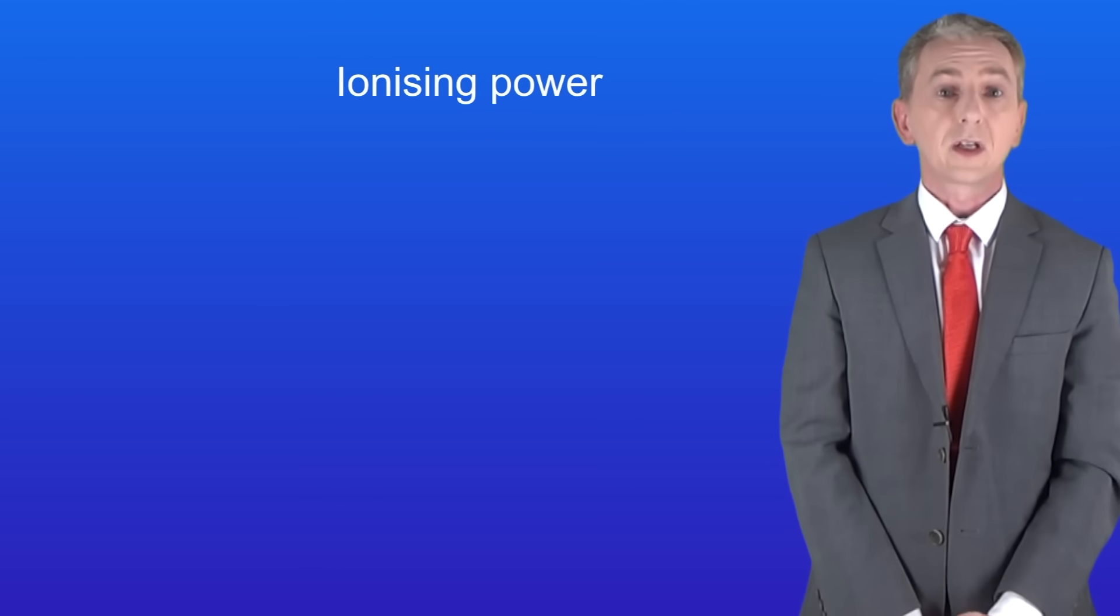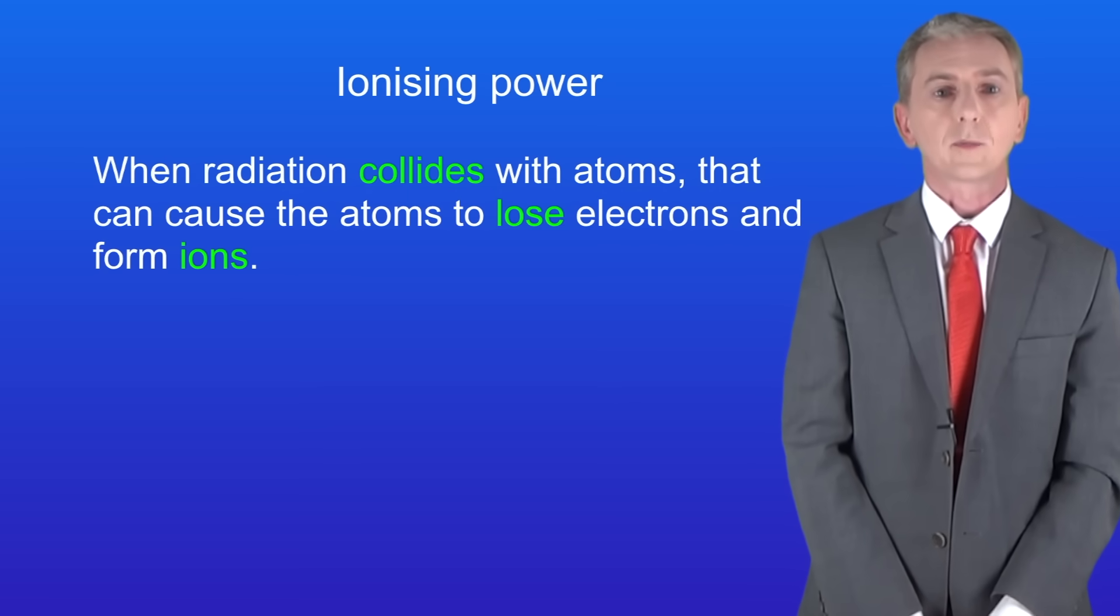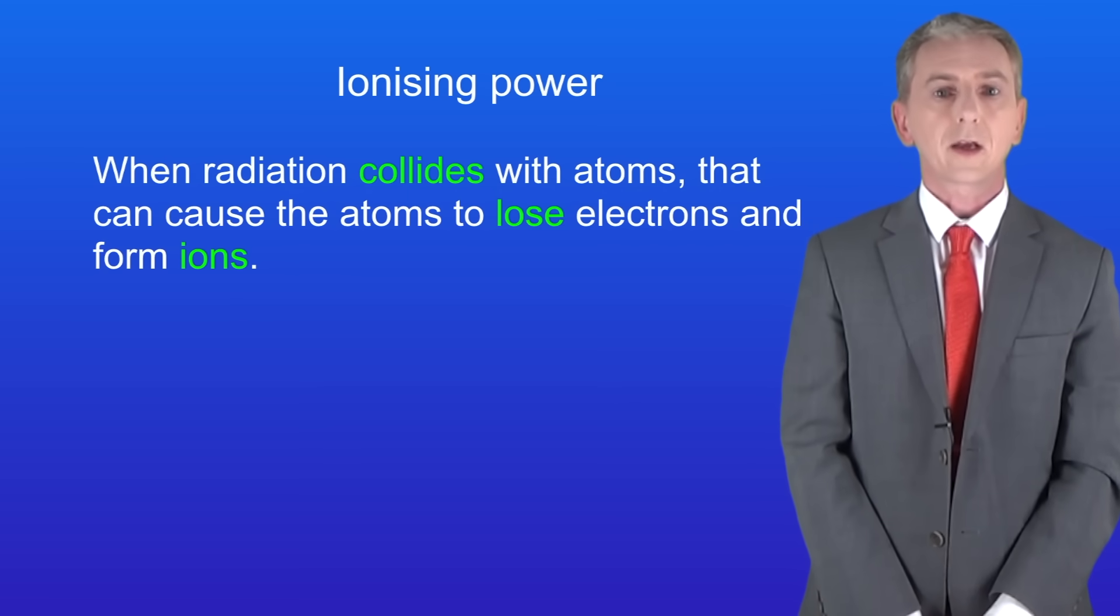Okay, the final property we need to look at is ionizing power. So first of all we need to explore what that means. When radiation collides with atoms, that can cause the atoms to lose electrons and form ions. And we saw in an earlier video that ions are atoms with a charge.